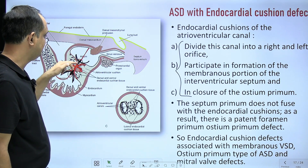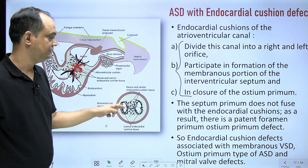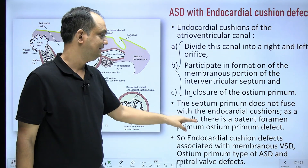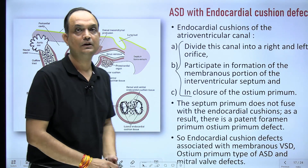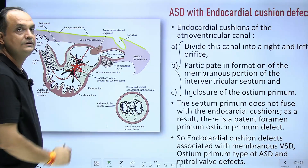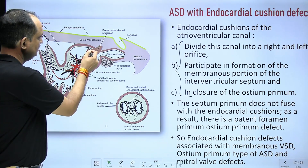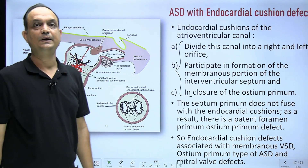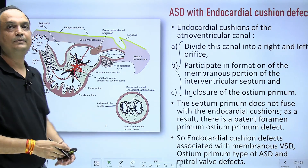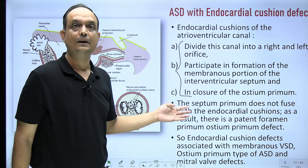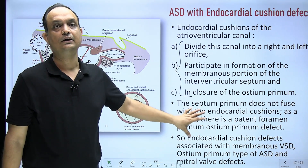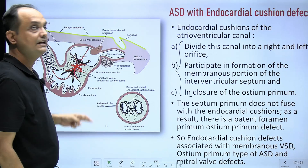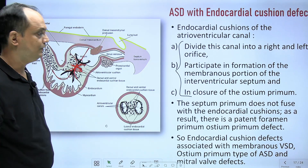Three things are formed by the AV cushion: one is the part of the inter-atrial septum, the part of the inter-ventricular septum, and the partitioning of the canal. The septum primum does not fuse with the endocardial cushion, resulting in patency of the foramen primum. This endocardial cushion defect of ASD is not an isolated ASD, because it is always associated with a VSD — specifically a membranous type VSD.